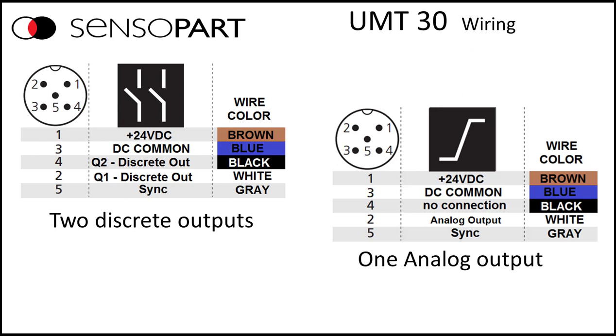On the right, we have the analog output version. You can see the white wire is the analog output. And based on the impedance of your input card, it'll auto-detect 4 to 20 milliamps or 0 to 10 volts.